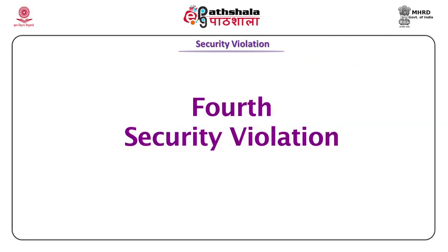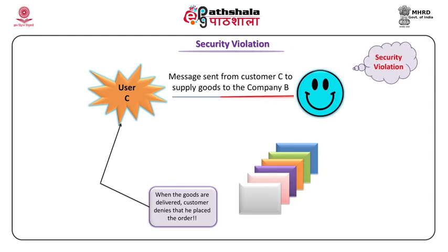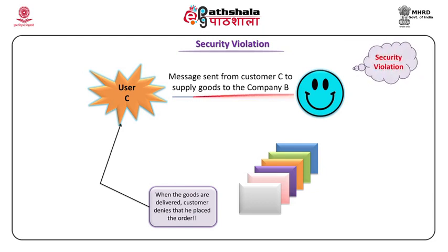The fourth security violation occurs when customer C places an order to company B for supplying goods. When company B supplies the goods, the customer says, 'I have never placed the order.' The customer is denying that he placed the order. So these are the four security violations.